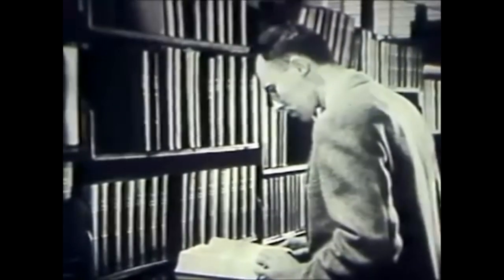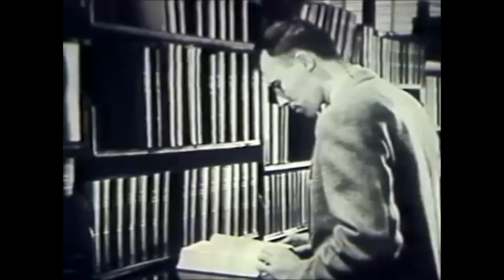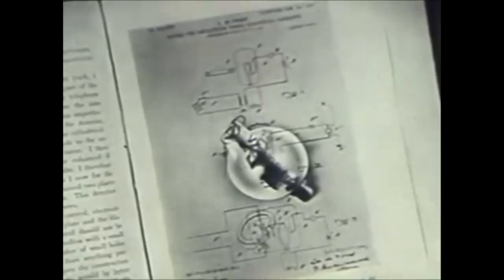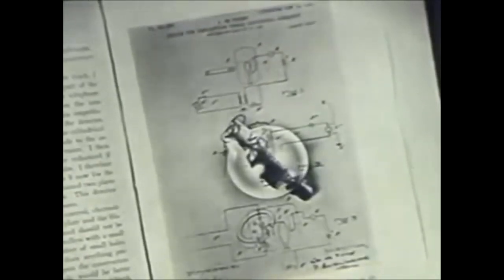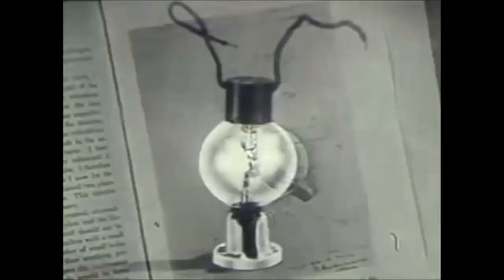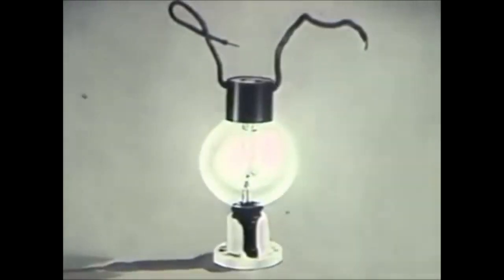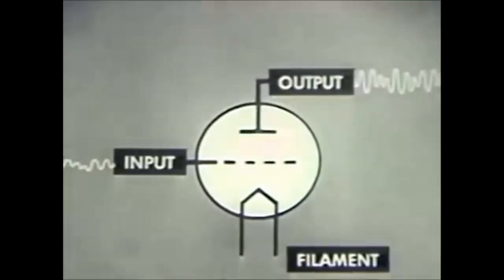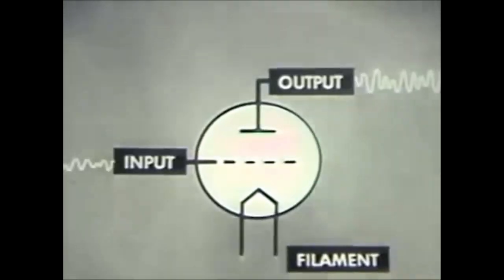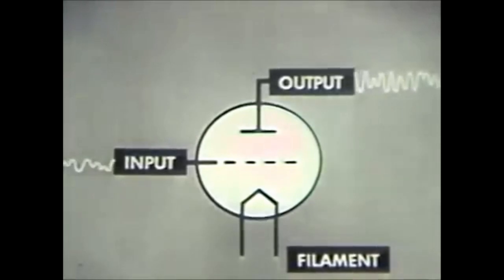The roots of the electronic age reach back into the early years of our century. In 1907, Dr. Lee DeForest discovered that a grid of fine wire placed between a filament and a metal plate in a vacuum tube could control the flow of electrons between the filament and plate, and the tube could be made to amplify as well as detect electrical waves. He called this amplifying tube an audion. Weak signals applied to the input or grid of the audion caused similar and much stronger signals to flow from the plate or output.